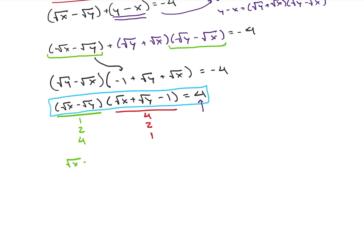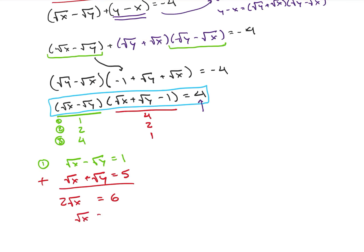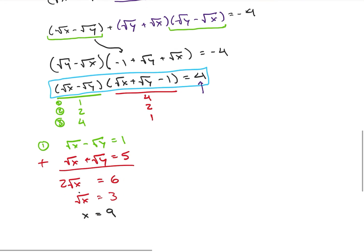Case 1: square root of x minus square root of y equals 1, and square root of x plus square root of y minus 1 equals 4, so square root of x plus square root of y equals 5. Adding these two equations gives 2 times square root of x equals 6, so square root of x equals 3, which means x equals 9. The negative factor case wouldn't work because square root of x would have to be negative.